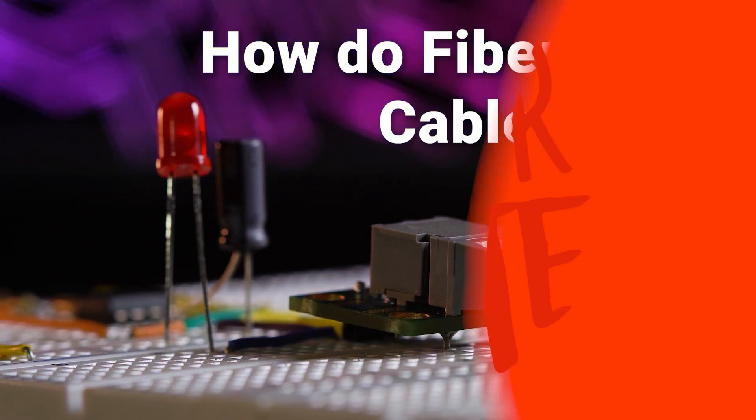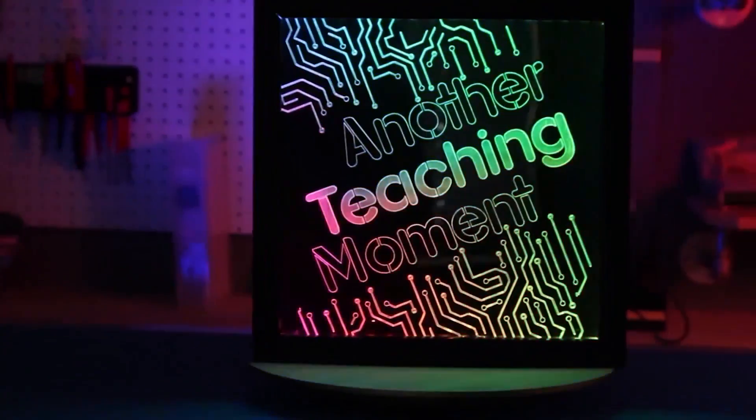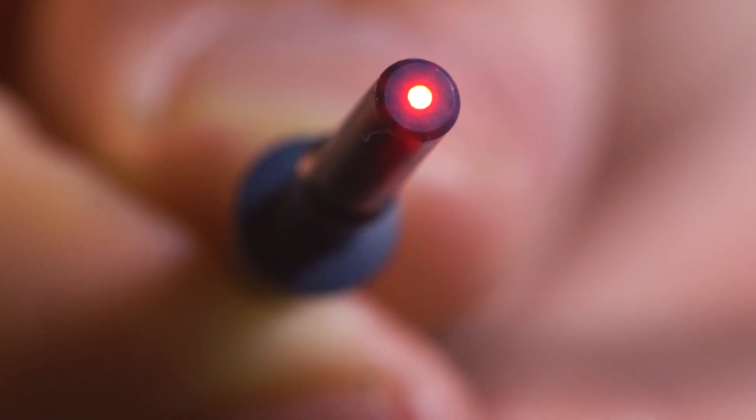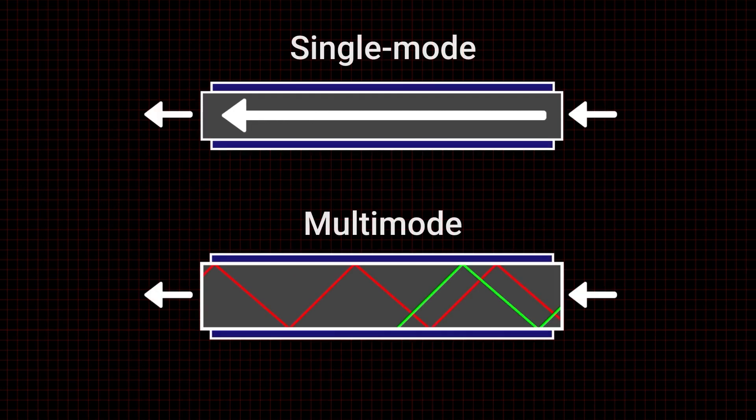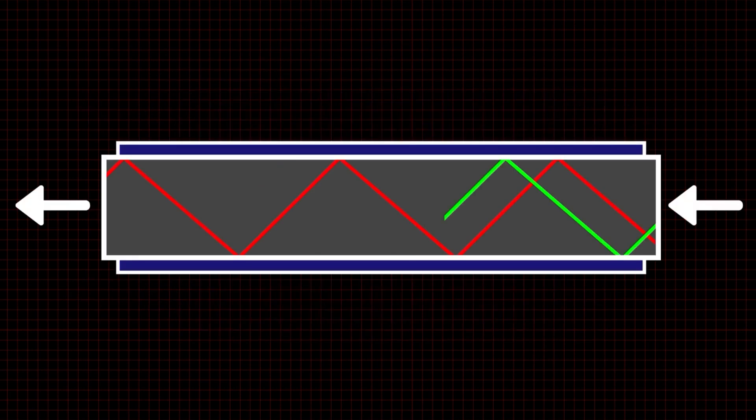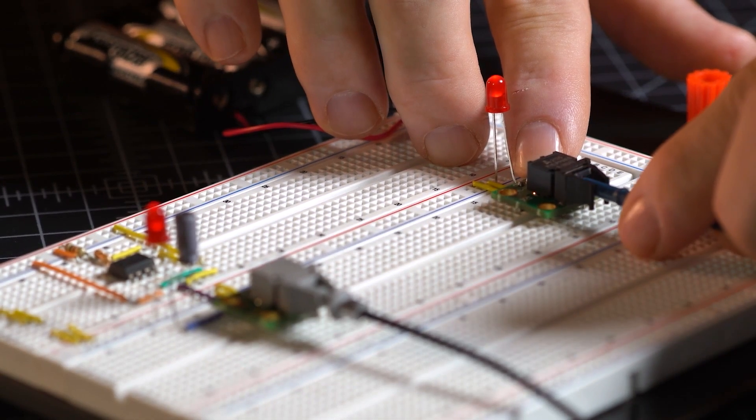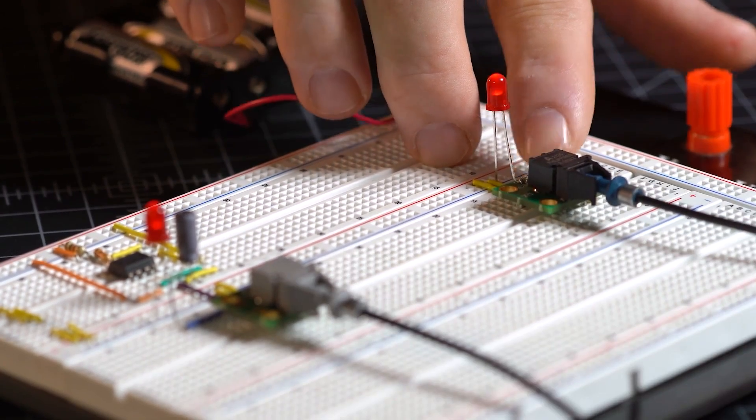For this week's Digikey Spotlight, they've got a quick primer on how fiber optic cables work. I thought I knew most of what there was to know about fiber optics, but I had no idea that multimode cables existed, which are larger diameter cables that can pass multiple signals that operate on different phases. I was also really excited to see these breadboard breakouts for fiber optic cables. Could be fun to use these in an upcoming project.